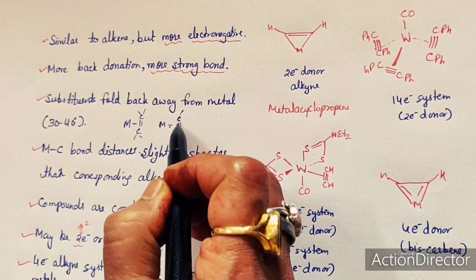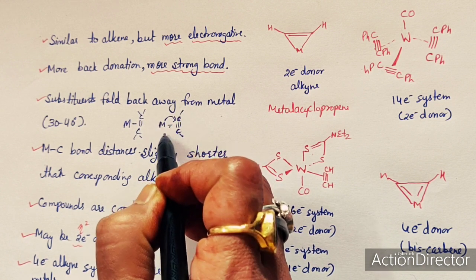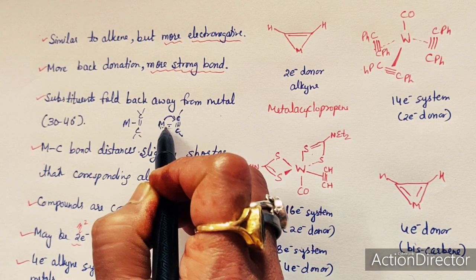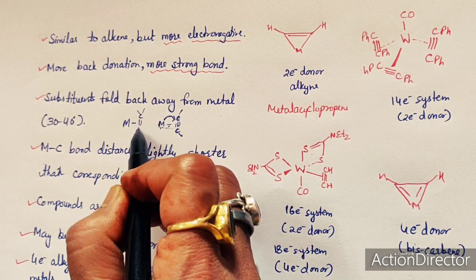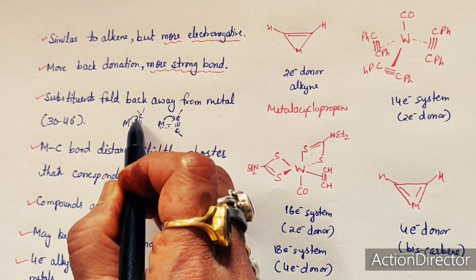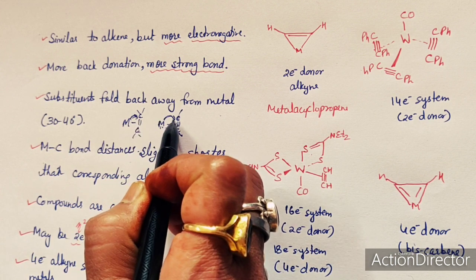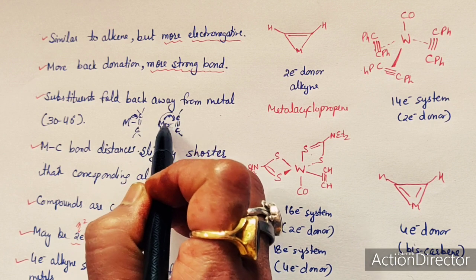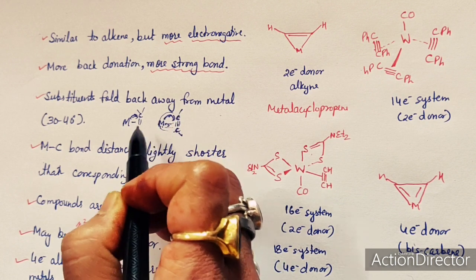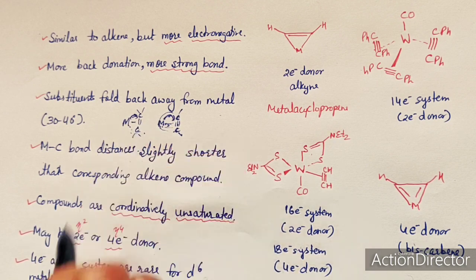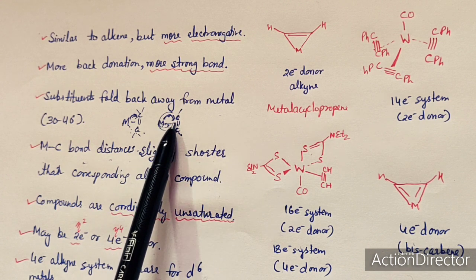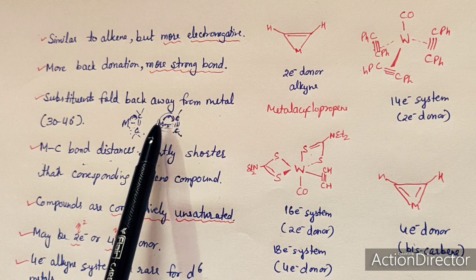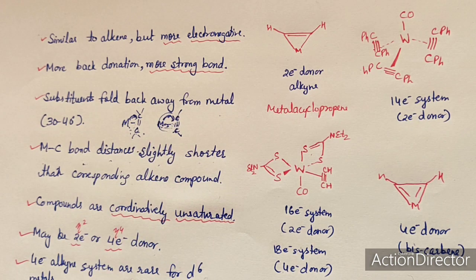In metal alkyne complexes, due to the high electronegativity of the alkyne, more back donation from metal to ligand takes place compared to metal alkene complexes where electronegativity is less. More back bonding results in more multiple bond character, making the M-C bond stronger in metal alkynes. Therefore the M-C bond length is slightly shorter in metal alkyne complexes compared to metal alkene complexes.